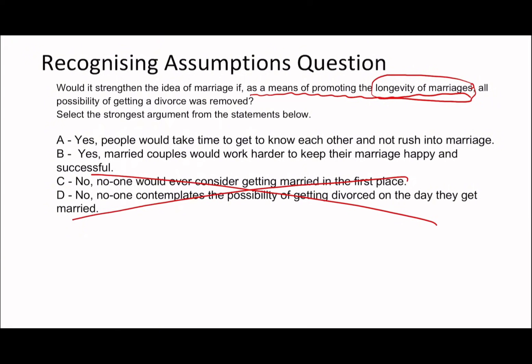C says 'no one would consider getting married in the first place' and D says 'no one contemplates the possibility of divorce on the day they get married' — these are blanket assumptions you can't make. More importantly, neither talks about the longevity of marriages. Between A and B: A says 'people would take time to get to know each other and not rush into marriage' — that talks about before marriage, not longevity. B says 'married couples would work harder to keep their marriage happy' — that's the only one addressing longevity. Even if you personally disagree, the answer is B.